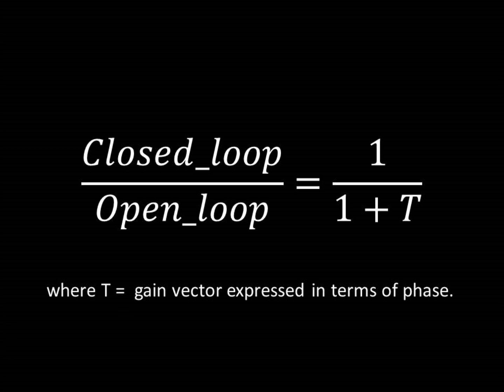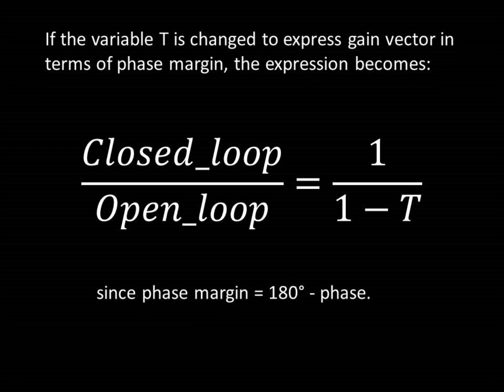So why are we so concerned with the overall stability of the control loop? After all, while 13 degrees may ring a bit, it won't oscillate and it does offer fast response. We care because all closed loop system performance is controlled by stability, and in particular the open loop to closed loop transformation due to the gain vector T, 1 over 1 minus T.